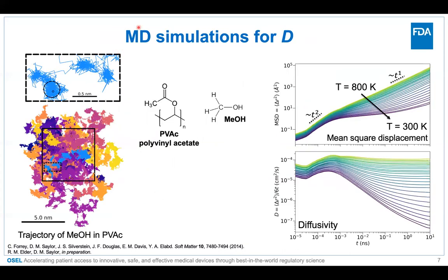That's where molecular dynamics or MD simulations come in. MD simulations allow you to basically watch molecules wiggle around and diffuse over time. Here I'm showing an example of polyvinyl acetate with just a few methanol molecules in it. The top left diagram shows the trajectory of a single methanol molecule over time, and this diagram shows the trajectories of all the methanol molecules bouncing around and diffusing over longer times.